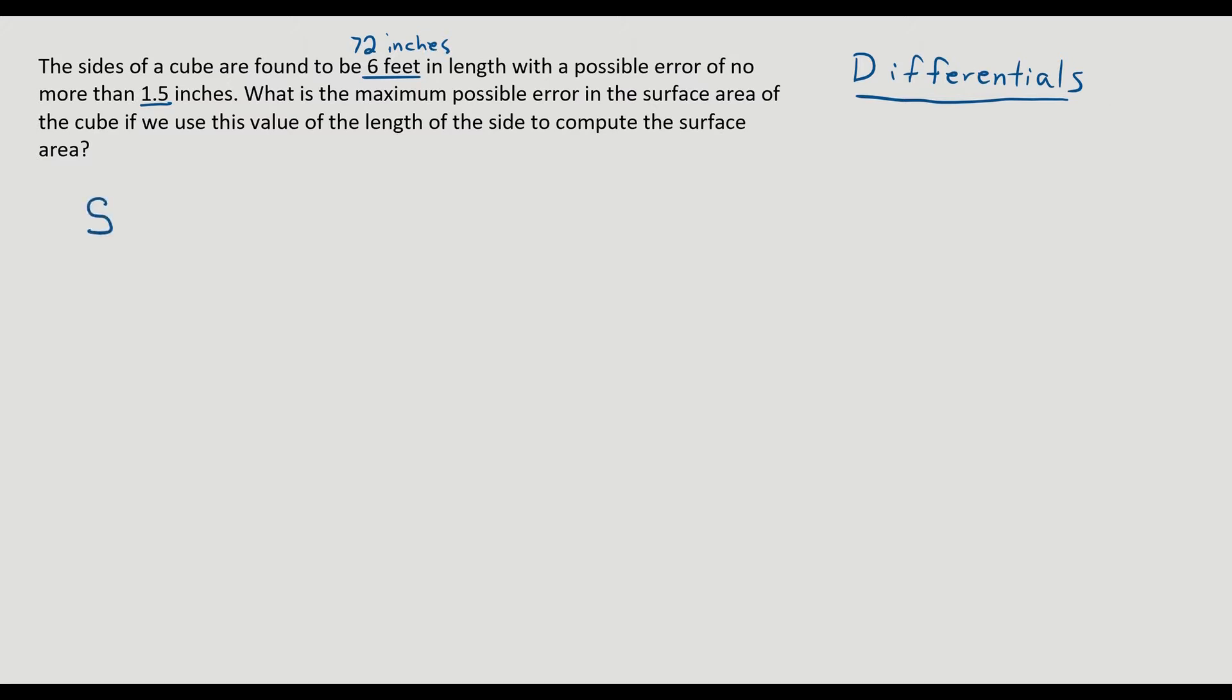So the surface area of a cube is surface equals 6 times s squared because the area of each face is s squared and you have 6 faces or sides to a cube. So 6s squared. So this is saying if I have an ideal side length of 72 for my square, I would have 6 times 72 squared, which gives me a surface area of 31,104 inches squared.